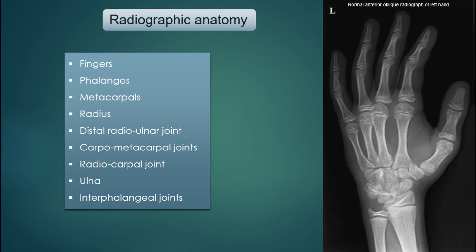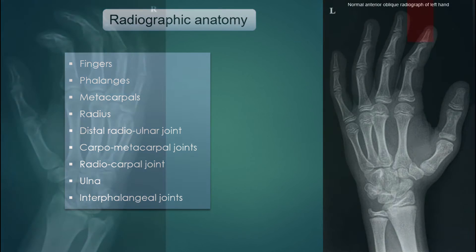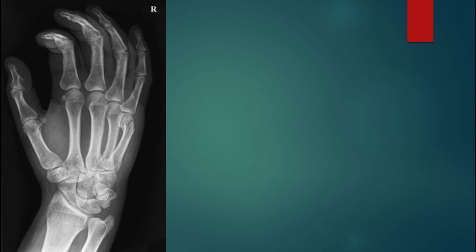Radiographic anatomy: fingers, phalanges, metacarpals, radius, distal radio-ulna joint, carpo-metacarpal joints, radiocarpal joint, ulna, and interphalangeal joint.